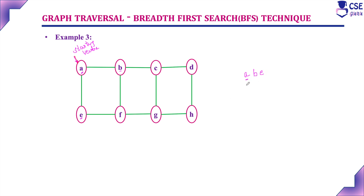Now for A, we have considered its adjacent unvisited vertices, B and E, and both we have visited. Next, we need to consider the adjacent unvisited vertices to B, that is C and F. If there are more than one vertex we need to visit, we need to break the tie by considering alphabetical order. So first we visit C, then we visit F. Now B is over. Next, consider adjacent unvisited vertices to E. Adjacent unvisited vertex to E is F, but this is already in the queue.